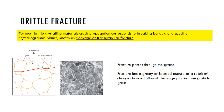When talking about brittle fracture for crystalline materials, crack propagation corresponds to breaking bonds along specific crystallographic planes. These are known as cleavage or transgranular fracture mechanisms, and the fracture propagates along grain boundaries.